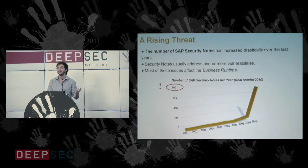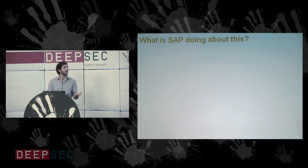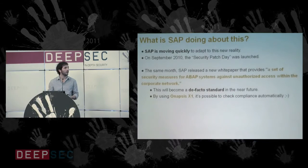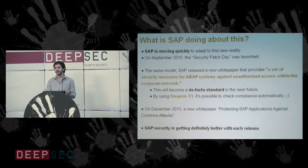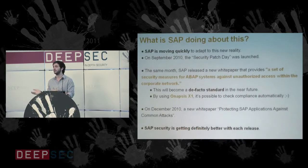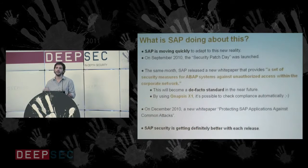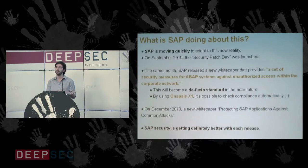One of the main problems in SAP landscapes is that customers do not apply patches promptly. I've been working with SAP reporting security vulnerabilities since 2006, and I made the first presentation on SAP security attacks at Black Hat Amsterdam in 2007. I can really see that SAP is moving to adapt to this new reality — back then it was quite a surprise for them, but things are getting better with each new release. The problem is that many customers are still using old releases, and upgrading is not easy, so many customers are at risk.